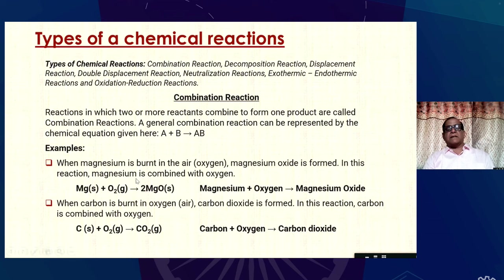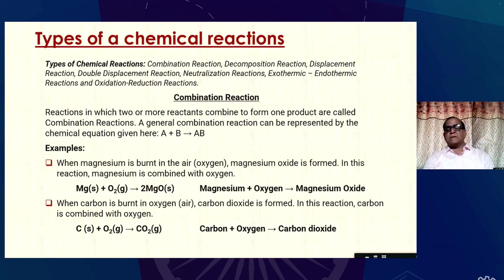Examples of combination reactions: when magnesium is burned in air, magnesium oxide is formed — magnesium combines with oxygen to form magnesium oxide. When carbon is burned in oxygen, carbon dioxide is formed. These are examples of combination reactions.